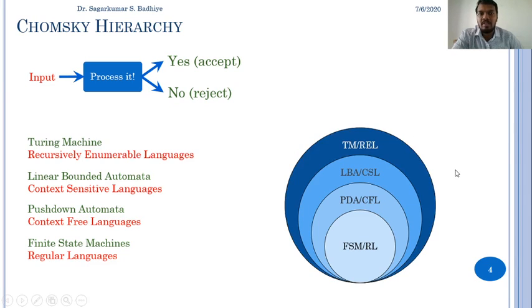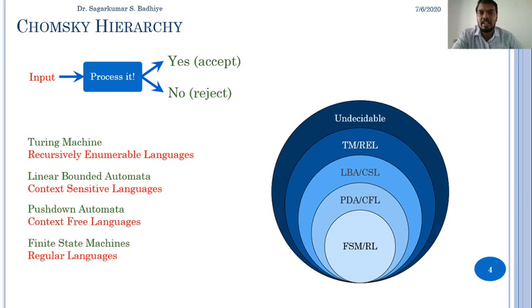The last level of these languages are the recursively enumerable languages which are represented by using Turing machines. These are the highest level of formal languages that are there. And anything which comes beyond this is called undecidable or any problem that cannot be represented by using maximum Turing machine, then they are unsolvable problems or undecidable problems.